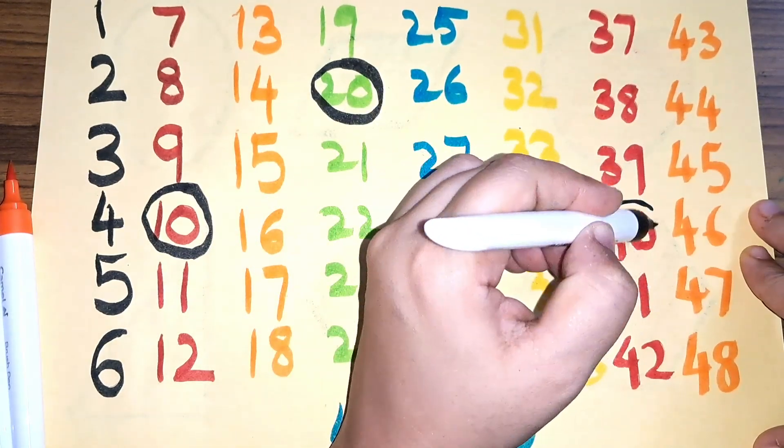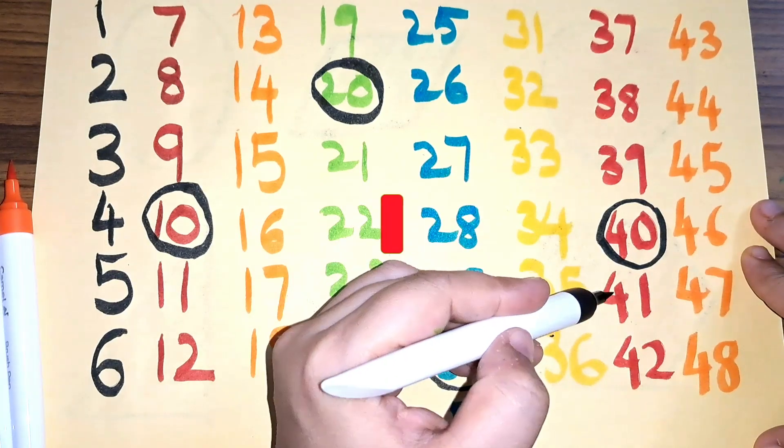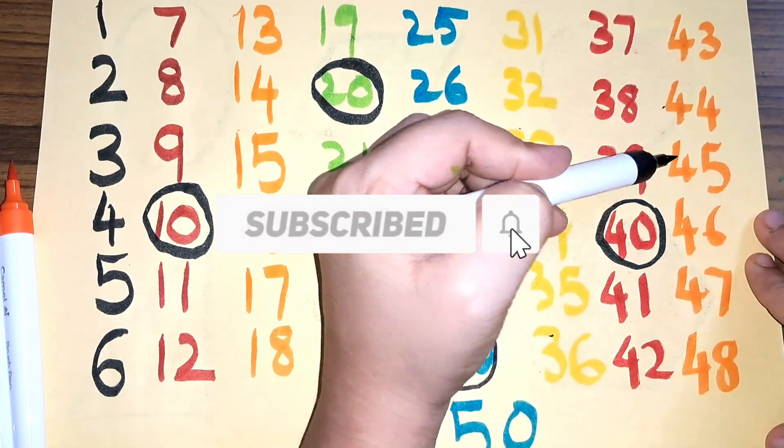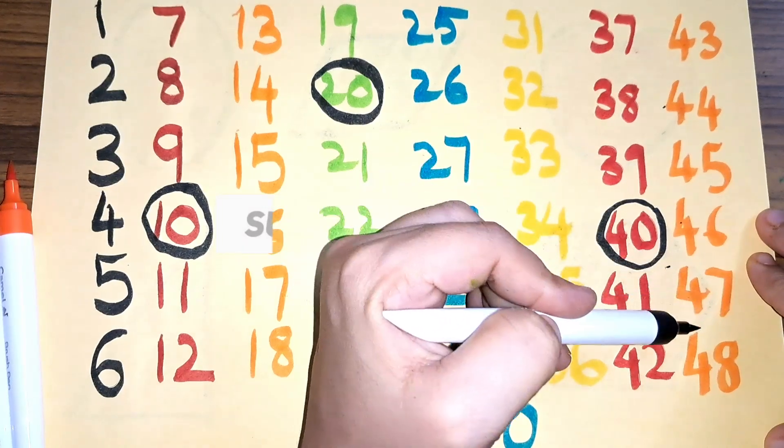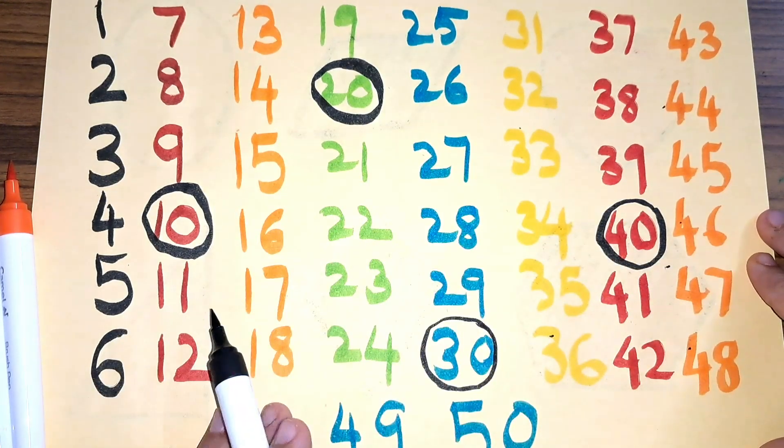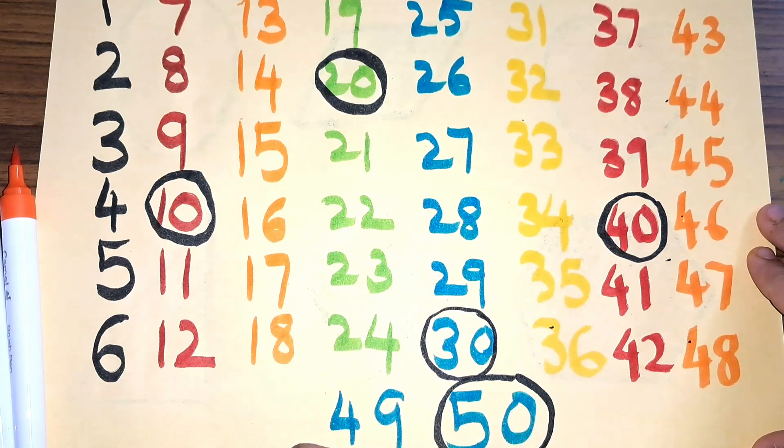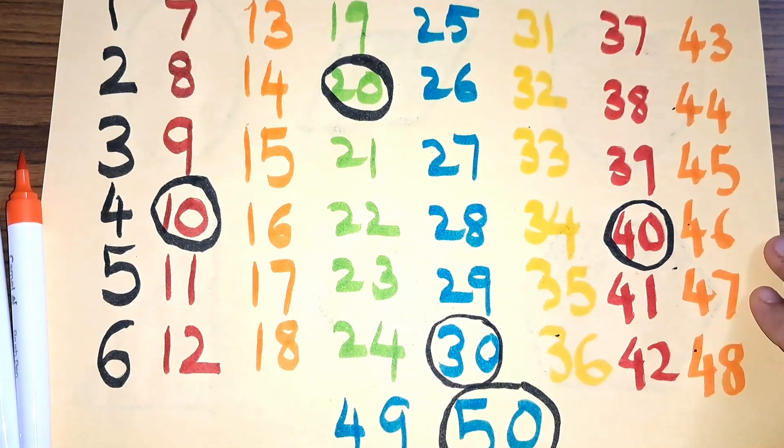Forty, forty-one, forty-two, forty-three, forty-four, forty-five, forty-six, forty-seven, forty-eight, forty-nine, and fifty. We have numbers 1 to 50.